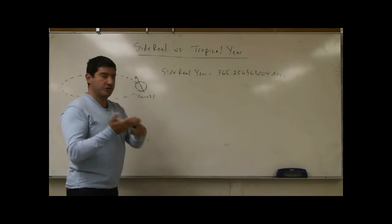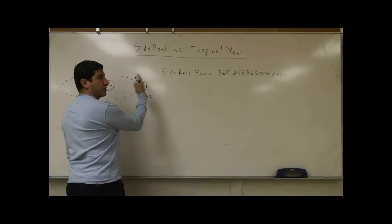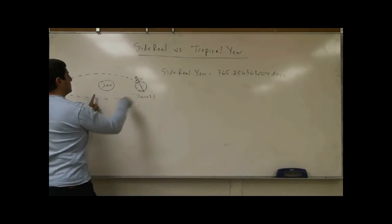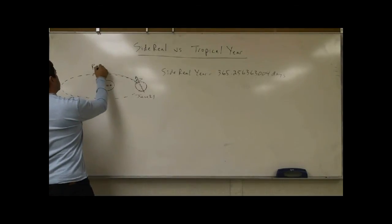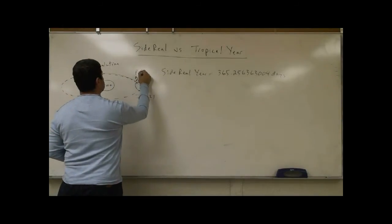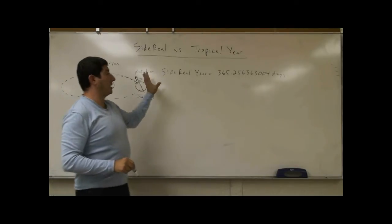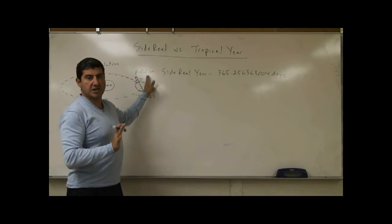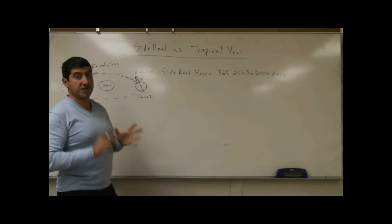The Earth is actually doing three things. It is rotating once every 24 hours, and it is revolving — going around the sun. In this lecture, we don't have to focus on the rotation, as it's not related. We just have to focus on the revolution and the precession.